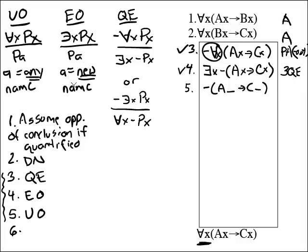What's the restriction on the names? It must be a new name. Let's write that down here by existential out. That's really important. New name when you're doing existential out. What names exist in our proof at this point in time?